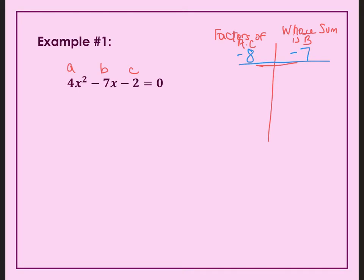Those factors have to add up to give me the B value, which in this case is negative 7. So I'm going to write down all the factors of positive 8: 1 and 8, 2 and 4. Now because it's a negative 8, one of the numbers has to be negative. So how can I combine any of these two numbers together to get a negative 7? The answer is 1 minus 8 would give me negative 7.